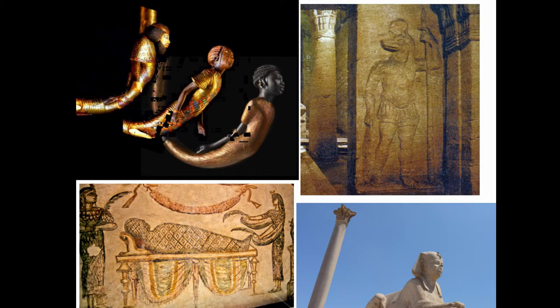With all this in mind, it is normal that Egyptians experienced several contacts with other cultures. For instance, in the 16th century BC, a flux of immigrants from the Levant founded the city of Avaris and introduced the horse and the chariot in Egypt.